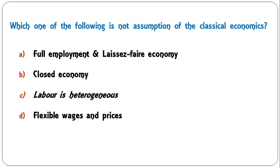Which one of the following is not an assumption of classical economics — full employment, laissez-faire economy, close economy, labor is heterogeneous, or flexible wages and prices? The correct answer is C — labor is heterogeneous. Classical economists believe labor is homogeneous, not heterogeneous. All other options are assumptions of classical economics. So C is the incorrect assumption and the correct answer.